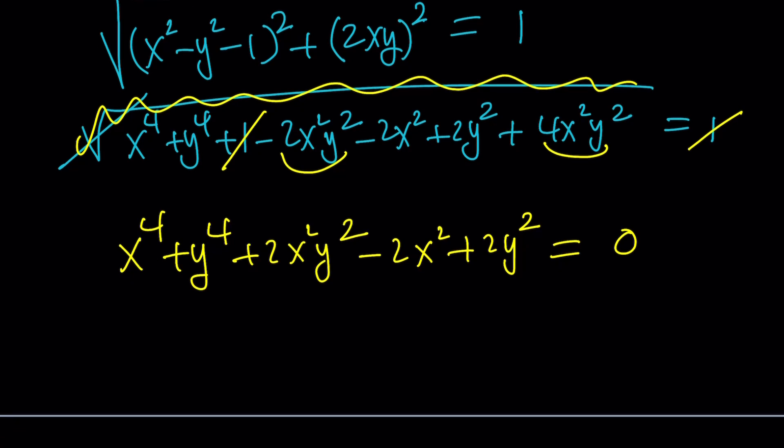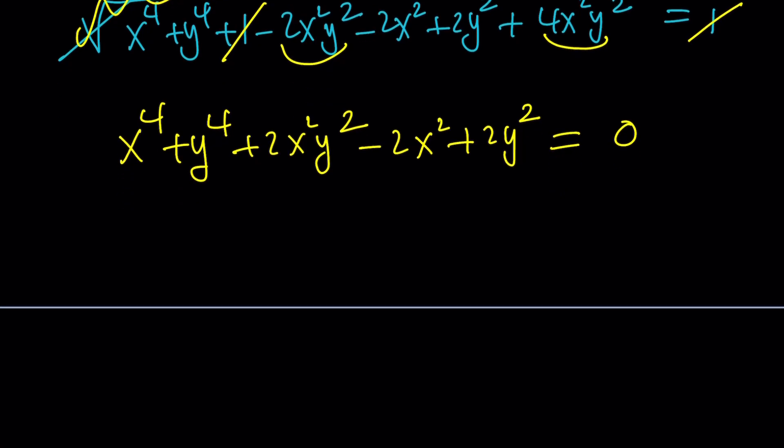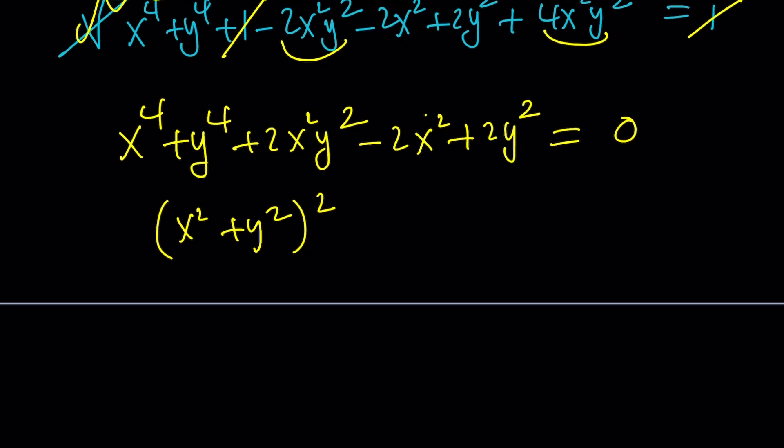Now this expression looks like a perfect square. It's like x squared plus y squared squared. And this expression is minus two x squared. Maybe I can put that expression on the right-hand side with two in front of it like this. And then try to understand what this means.